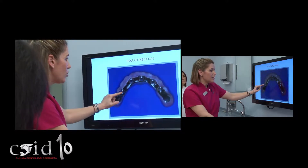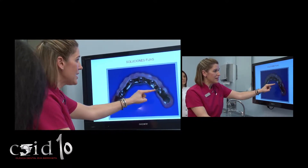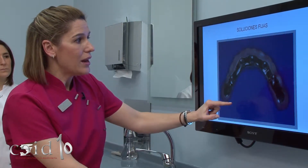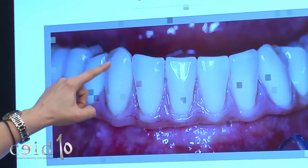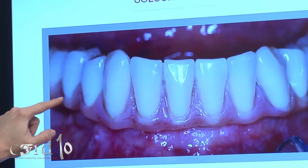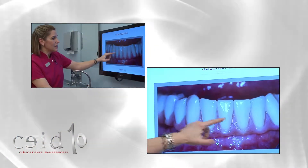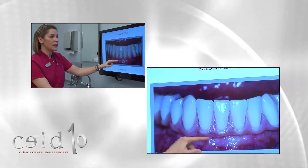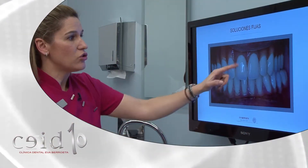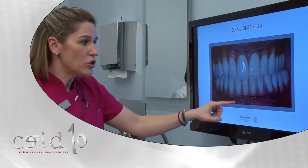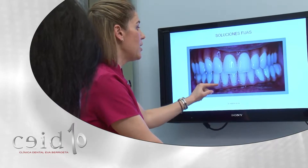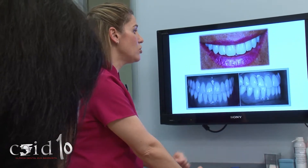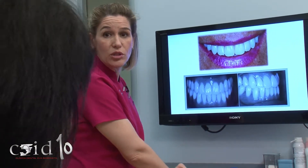Esta prótesis lleva una base de oro que va a ser conectada a cada uno de los implantes y llevará unos dientes de resina unidos a esta base de oro. Fijaos la integración de los dientes en la encía y cómo estéticamente la encía rosa que vamos a colocar en nuestra prótesis se funde con la estética de la encía de la paciente. Es importantísimo el mantenimiento posterior de esta prótesis, ya que los implantes, al igual que los dientes, se pueden infectar, por lo cual las revisiones y los mantenimientos van a ser importantísimos a lo largo de su vida.